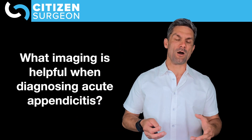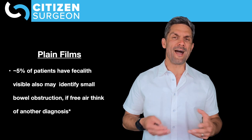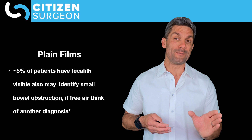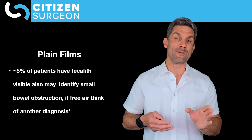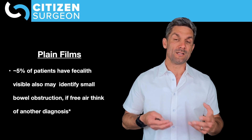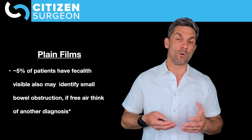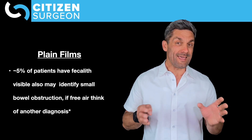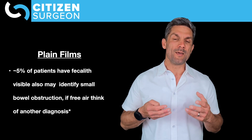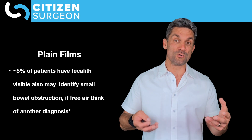For imaging, plain films: about 5% of people have a visible fecalith on a plain film. Plain films aren't particularly helpful for diagnosing acute appendicitis, but can help identify significant fecal burden or constipation, diagnose small bowel obstruction with dilated loops and air-fluid levels, or detect free air on an upright or left lateral decubitus film — though free air usually points to something other than appendicitis.